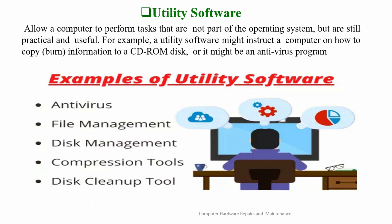Another type of software is utility software. Utility software allows a computer to perform tasks that are not part of the operating system, but are still practical and useful. For example, utility software might instruct a computer on how to copy information on a CD drive, or it might be an antivirus.